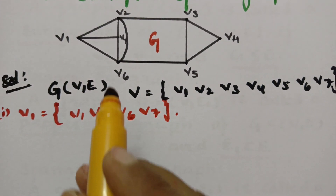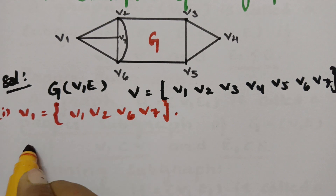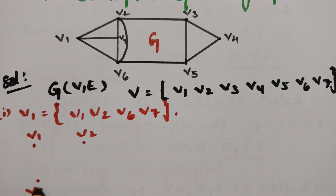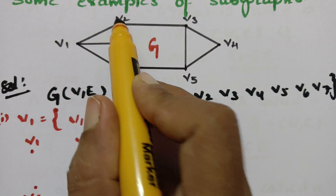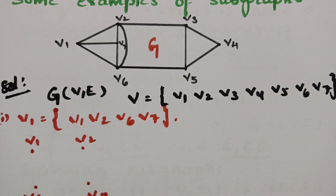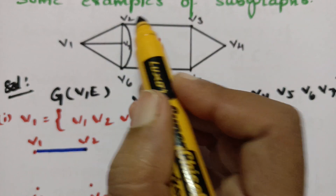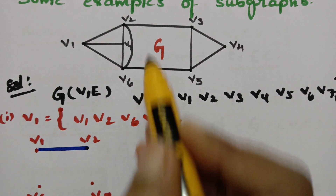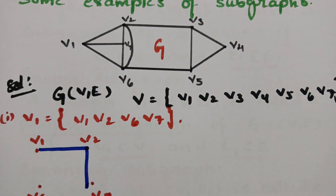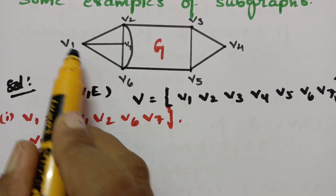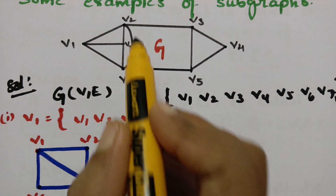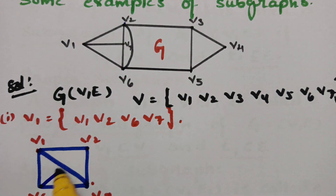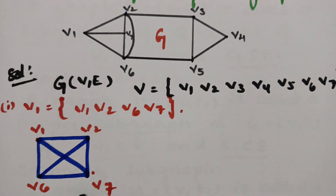Now I'll make the subgraph with V1, V2, V6, and V7. From the main graph, V1 and V2 share an edge, so I draw that edge. V2 to V7 has an edge, V7 to V6 has an edge, V6 to V1 has an edge, V1 to V7 has an edge, and V2 to V6 has a parallel edge. So this will be a subgraph of the main graph G.